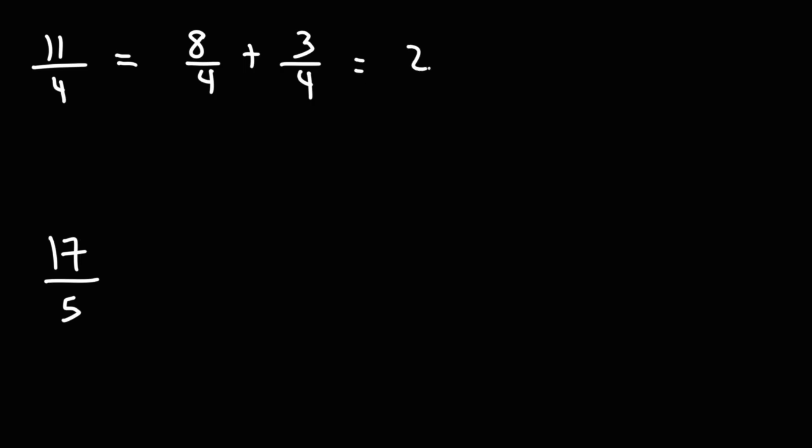Now, 8 divided by 4 is 2. And 2 plus 3 fourths, we can write that as 2 and 3 fourths. So that's how you can convert an improper fraction to a mixed number without using long division.